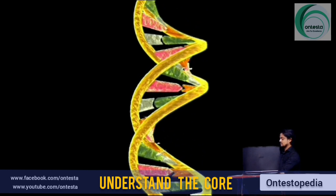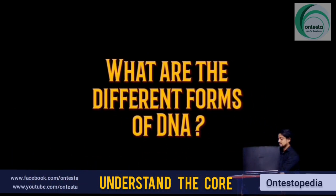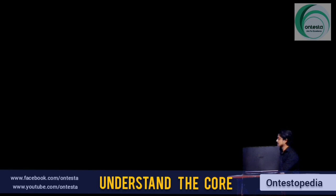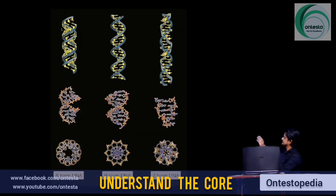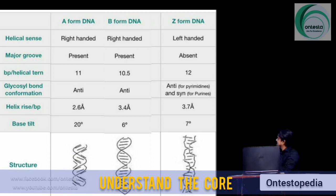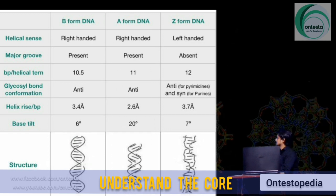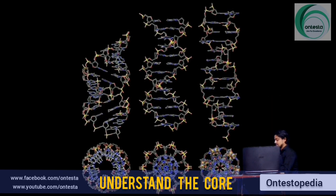The number of base pairs in a pitch varies with different forms of DNA. DNA can be found in different forms: A-DNA, B-DNA, and Z-form DNA. We can differentiate all 3 kinds on the basis of helical sense, major groove presence, base pairs per helical turn, glycosidic bond conformation, helical rise per base pair, base tilt, and overall structure. Among all three, B-DNA is the most common form, A-DNA is the widest form, and Z-DNA is the longest form.